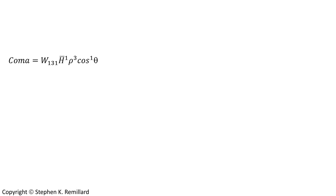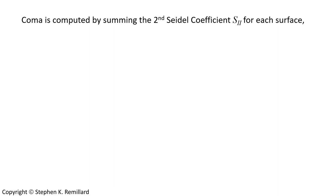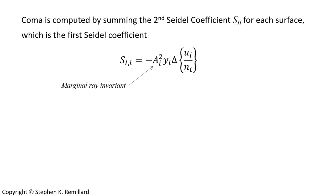To calculate coma, measured in dimensions of length, the second Seidel coefficient must be computed for each surface of the system. For compound lenses with several glass surfaces, physical stock coma can be calculated for each surface and summed. For a given surface, the Seidel coefficient for coma is readily calculated from the first Seidel coefficient S₁, which is the product of the marginal ray invariant squared, the height of the ray, and the difference in the ratio of horizontal angle over index of refraction on either side of the surface — with a minus sign.